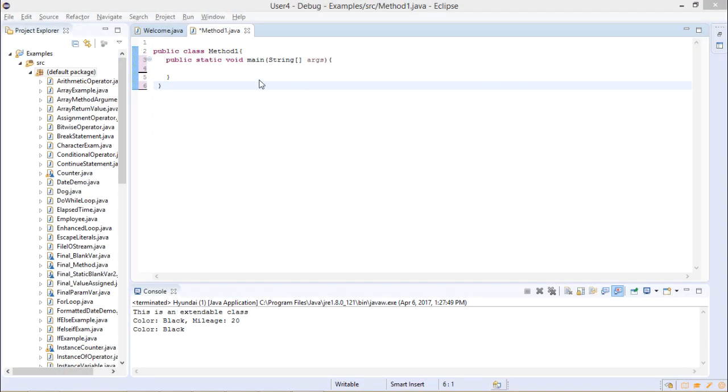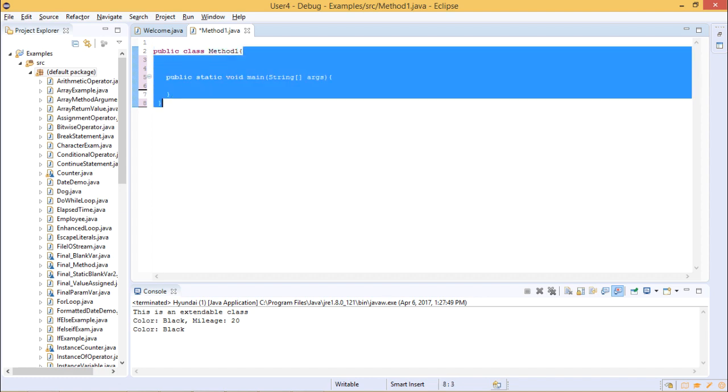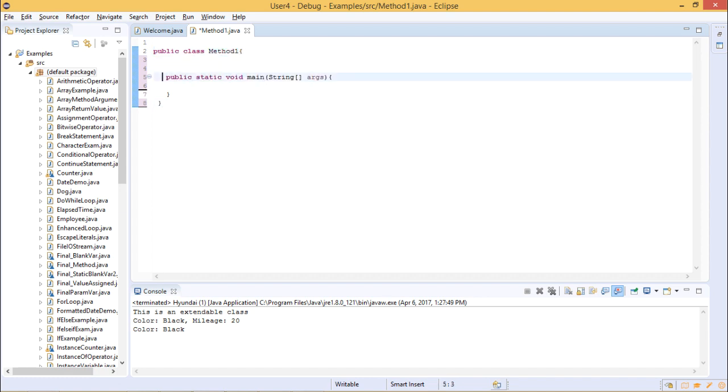In this class, we shall explain you how to write method. So let us write from scratch. I have created a class, public class, the class name is method one and open the braces. Under that, I have created one static void main method. So this is the main method through which Java starts executing the block of statement.